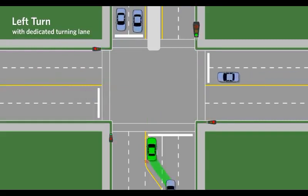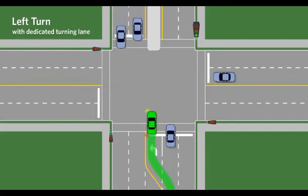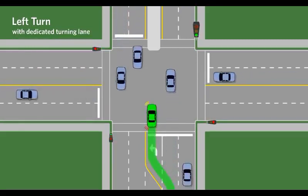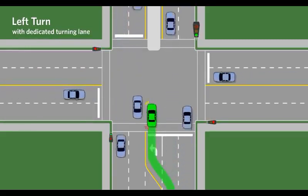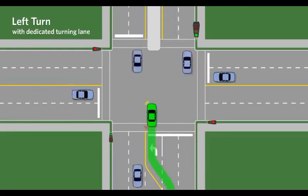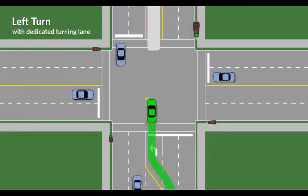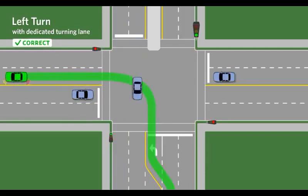If there is no arrow, advance into the intersection keeping the vehicle wheels straight, yield to oncoming vehicles and pedestrians at crosswalks, and then proceed when safe into the left lane.